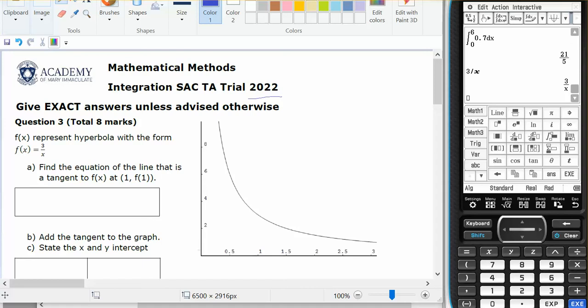This is question number 3. So we have this curve 3 over x and it's drawn for us, it's a hyperbola, and we want to find the equation of the line that is a tangent at x equals 1.